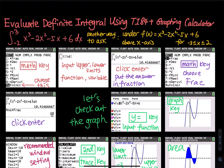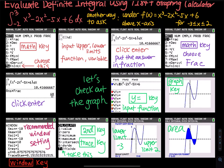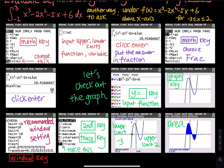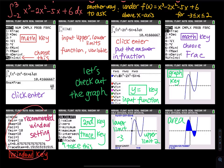Then hit the graph key, which is on the upper right-hand corner. You should be able to see the graph. If you see something funny, maybe your window is not in the optimal position. Hit the window key, which is right next to the Y-equal key. My recommended window setting: X and Y go from negative 10 to 10, with a scale of 1. Press the graph key again and you should see the picture.